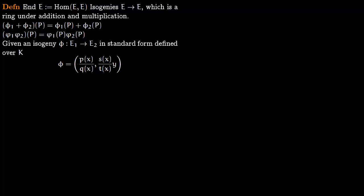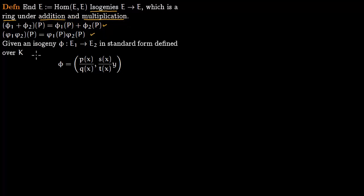In this lecture we want to talk about the kernel of an isogeny and show that it is finitely generated. But before that, let us fix some notation. An endomorphism of an elliptic curve is nothing but a homomorphism from E to E. More precisely, this is the set of isogenies from E to E, and these isogenies form a ring under addition and multiplication.